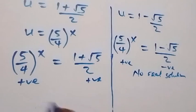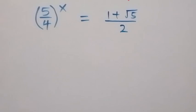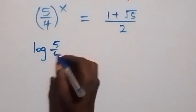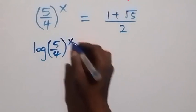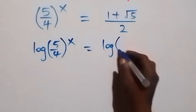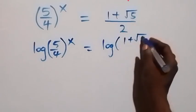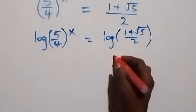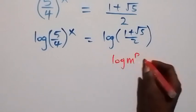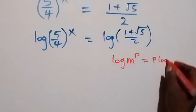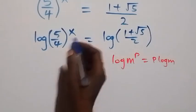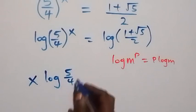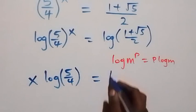Then on the valid side, we solve for x by taking the log on both sides: log of (5/4) raised to power x equals log of (1 plus root 5) over 2. Applying the power log rule — log n raised to power p equals p log n — the power x comes out, giving x times log(5/4) equals log((1 plus root 5)/2).